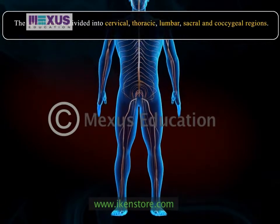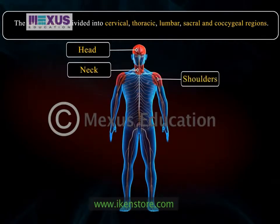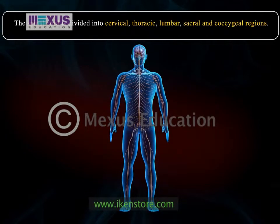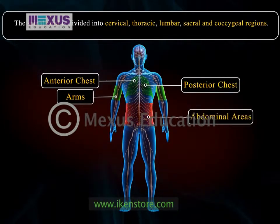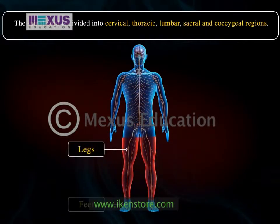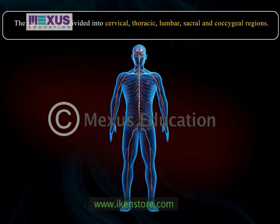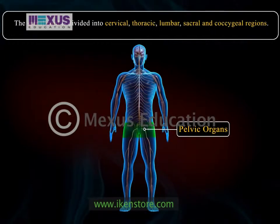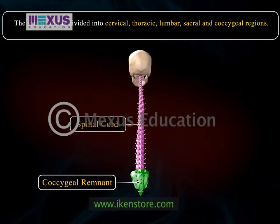Eight cervical segments transmit signals from or to the areas of the head, neck, shoulders, arms and hands. Twelve thoracic segments transmit signals from or to the part of the arms and the anterior and posterior chest and abdominal areas. Five lumbar segments transmit signals from or to the legs and feet and some pelvic organs. Five sacral segments transmit signals from or to the lower back, pelvic organs, genital areas and some areas in the legs and feet. The coccygeal remnant is located at the bottom of the spinal cord.